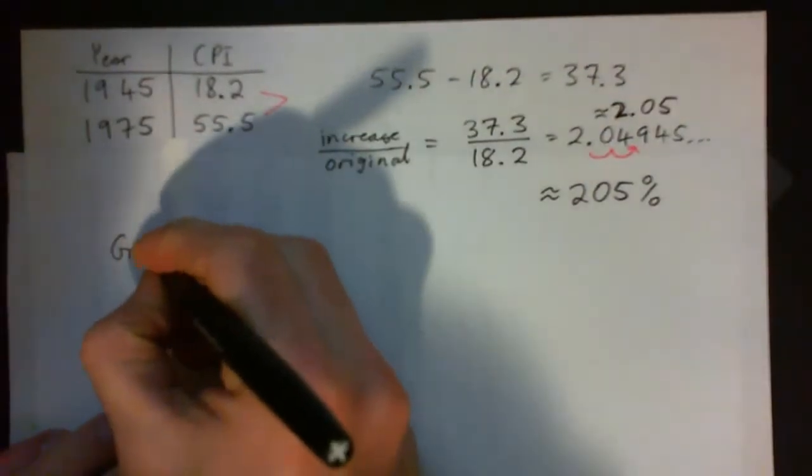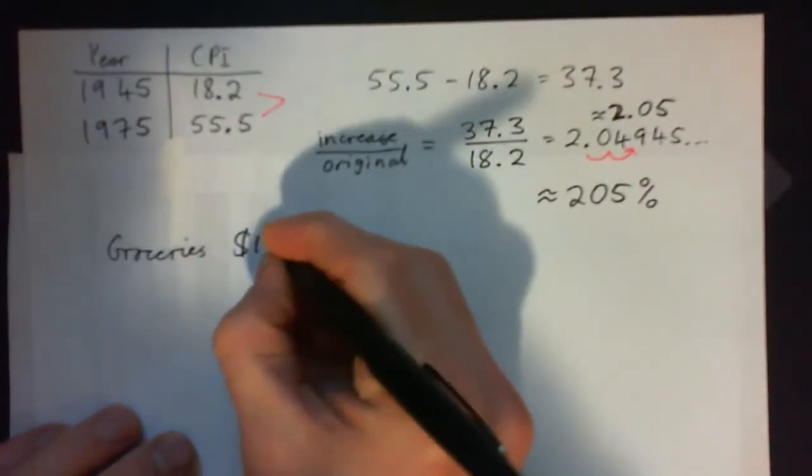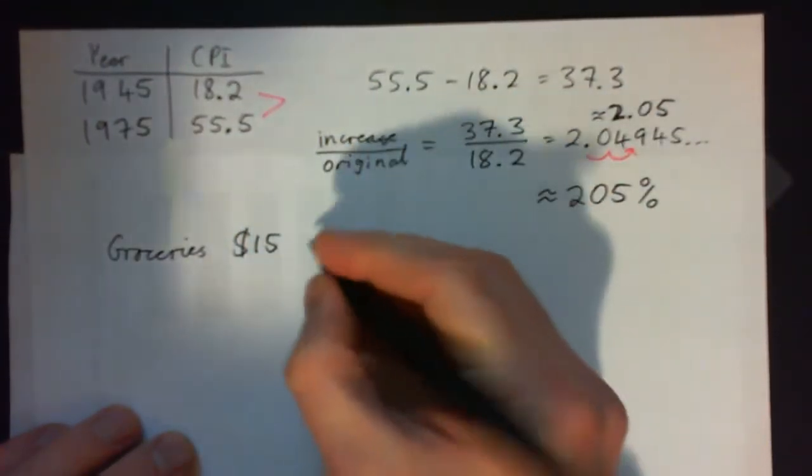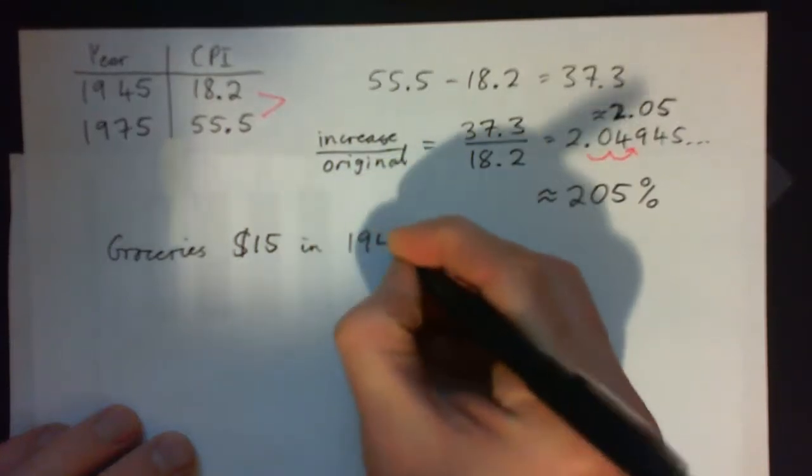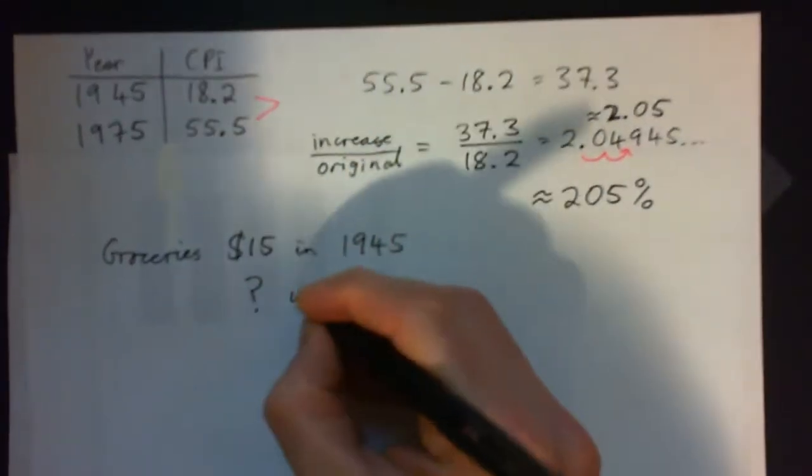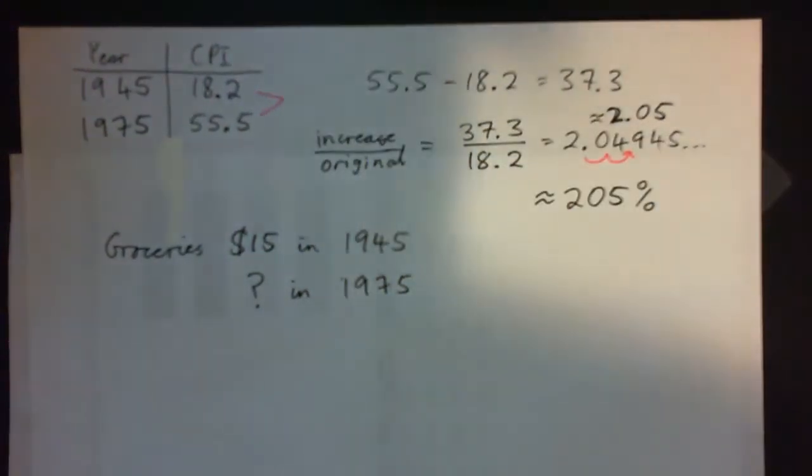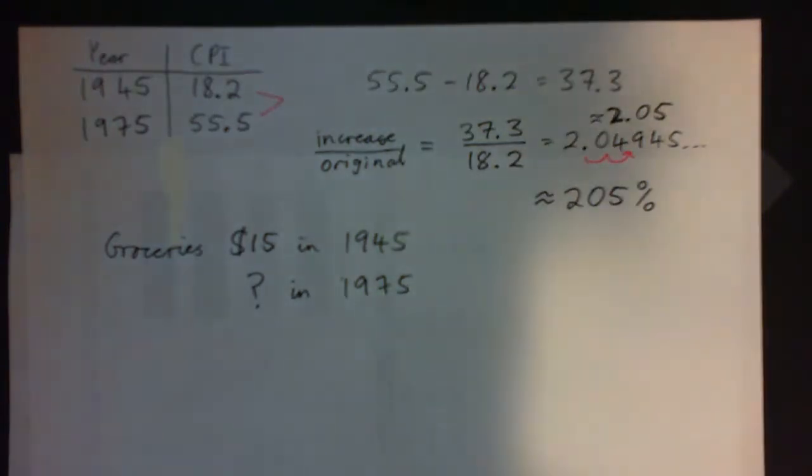The next part is, if you have groceries that cost $15 in 1945, what would they cost in 1975? You can press pause and try that. That's the next part of the question.